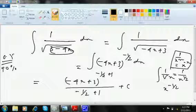Minus 1 by 2 plus 1 is 1 by 2 only. So this is minus 4x plus 3 whole to the power 1 by 2 divided by 1 by 2 into minus 4, so this is divided by minus 2 plus c. Finally this 2 will move up.